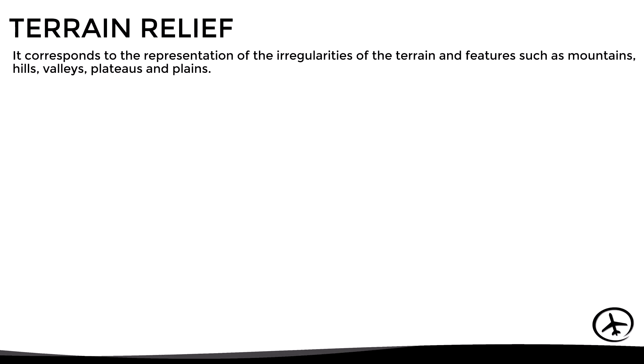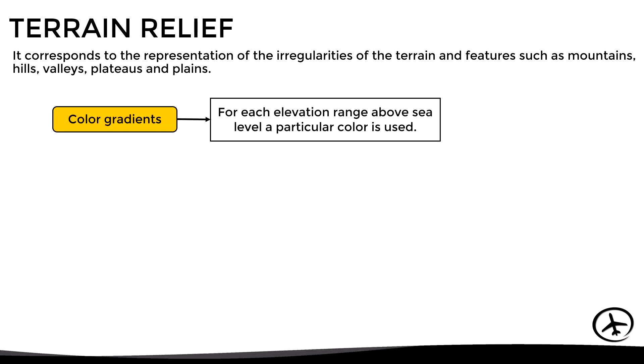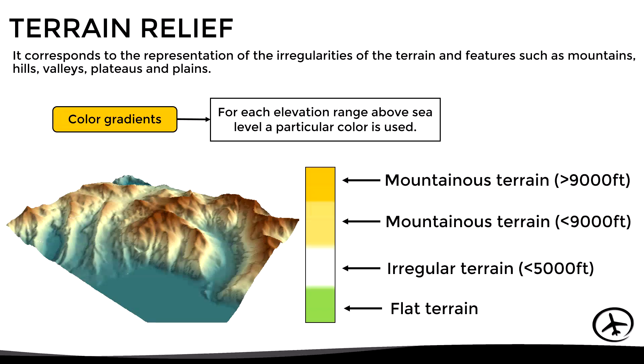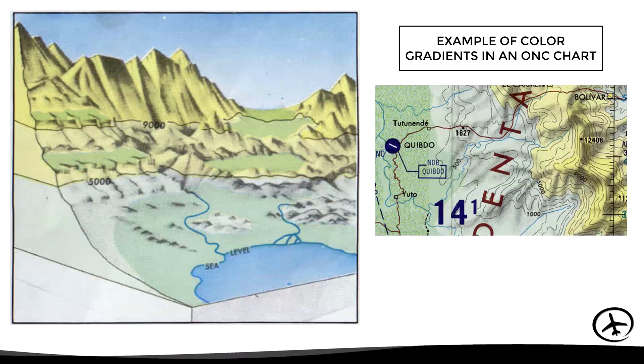Then we have the terrain relief, which corresponds to the graphic representation of the irregularities of the terrain — features such as mountains, hills, valleys, plateaus, and plains. Since we are trying to represent 3D figures on a flat surface, color gradients are used, meaning that for each elevation range above sea level a particular color is used. Here we have the colors typically used in operational navigation charts, and in these other images we can see some examples of how they are used to represent mountainous terrain.